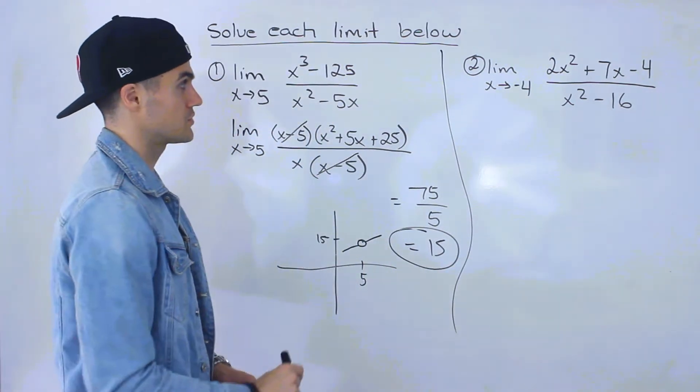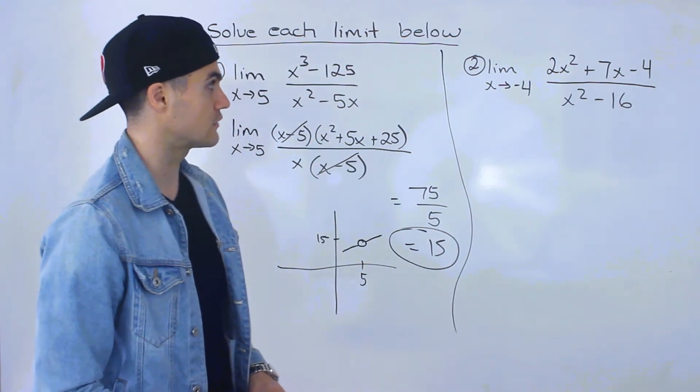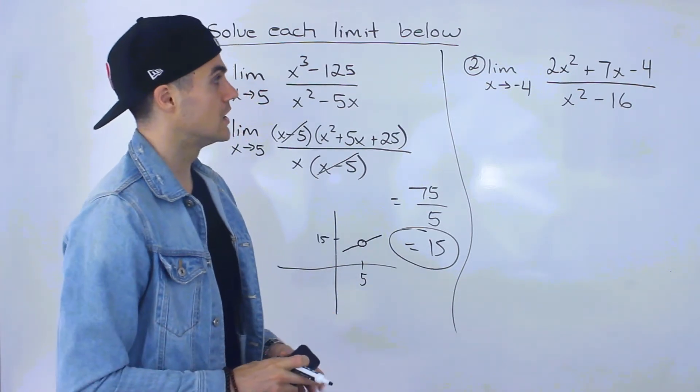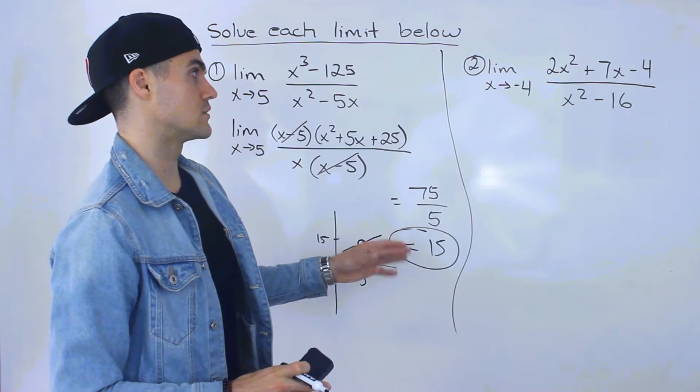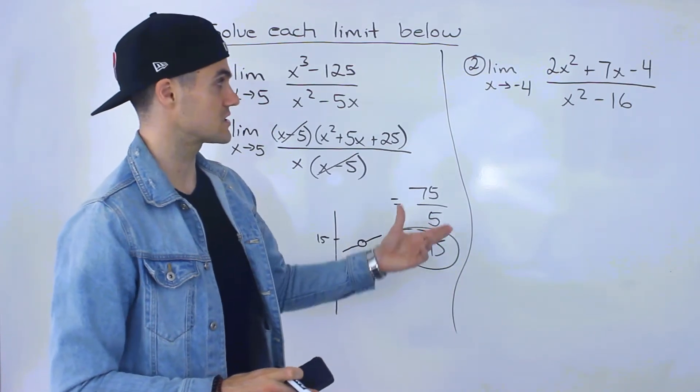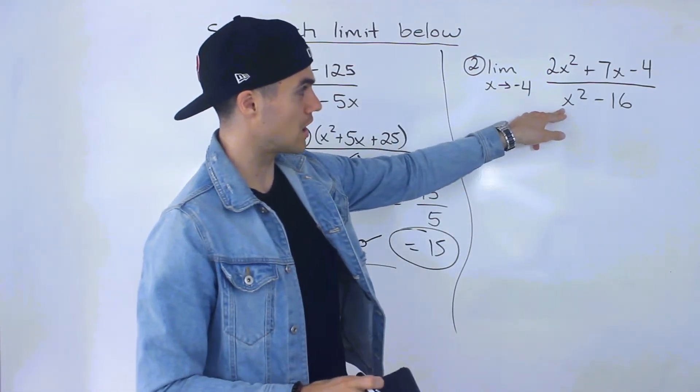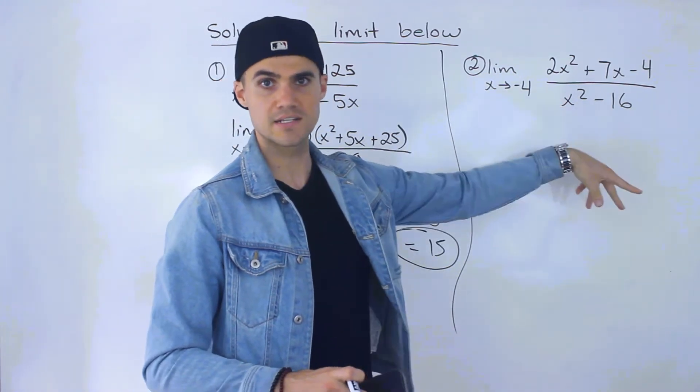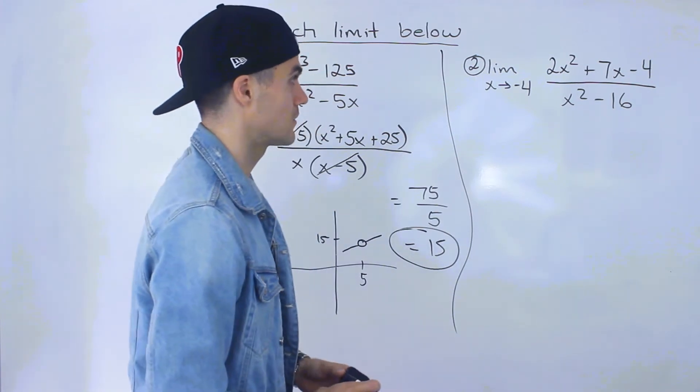Let's move on to number 2. So we have the limit as x approaches negative 4 of 2x squared plus 7x minus 4 over x squared minus 16. Notice that we can't do a direct substitution, because if we sub in negative 4 here in the denominator, we'll have negative 4 squared, which is 16 minus 16 is 0. Can't divide by 0.